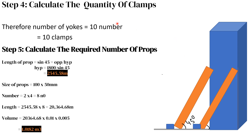The quantity of clamps required is the same as the number of yokes, since the clamps are holding the yokes in place. Therefore, we need 10 clamps.